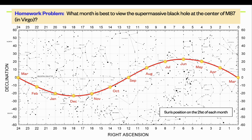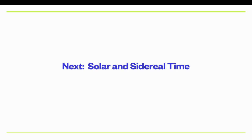A similar question: what if you wanted to observe the supermassive black hole at the center of the galaxy M87? That's in the constellation Virgo. You can estimate where the center of Virgo is on the chart, estimate its right ascension, and then figure out what the best time to observe that galaxy would be.